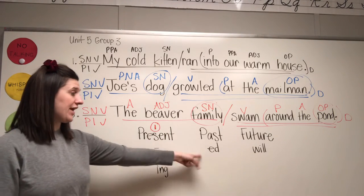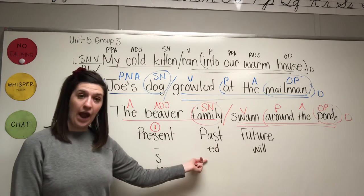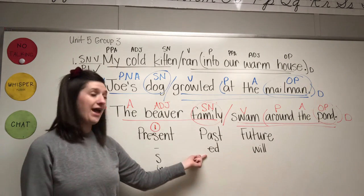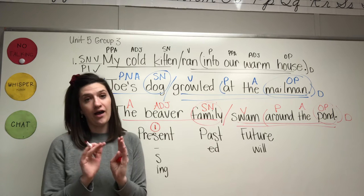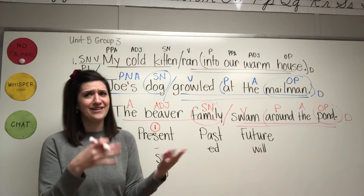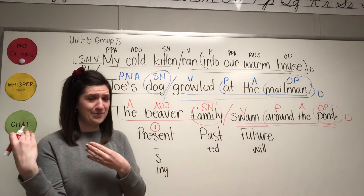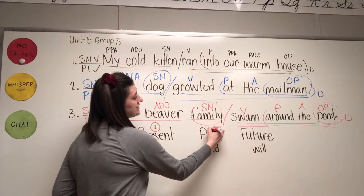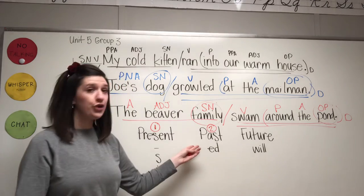Past tense, a hint that your action is happening in the past tense is if your verb ends with an ED. I played outside. I already did it. It's done. It happened in the past. You're going to label past tense verbs with a two.